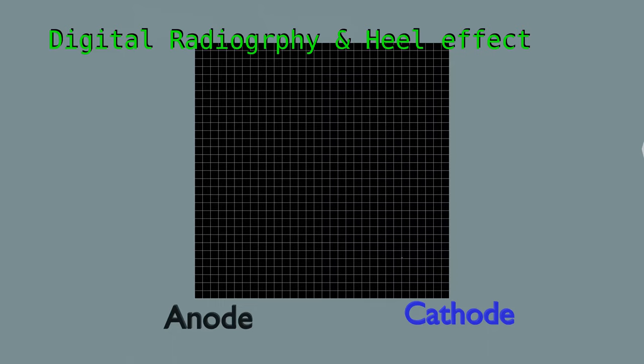In film screen radiography, anode cathode orientation of x-ray tube is significant to obtain distinguishable optical density on films. But, tube orientation is less significant in digital radiography. A uniform beam can produce a uniform grayscale value on a DR image.